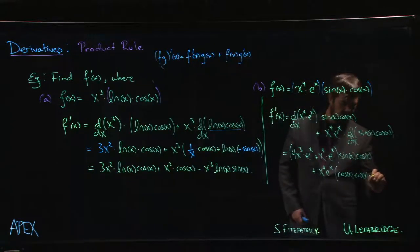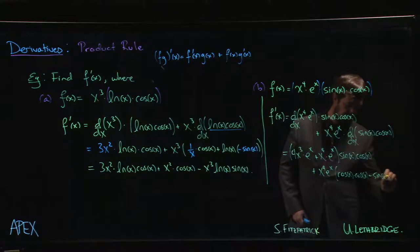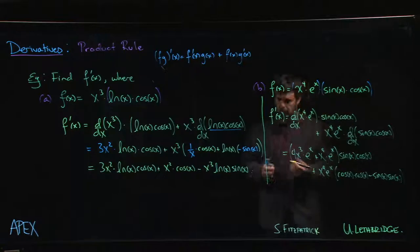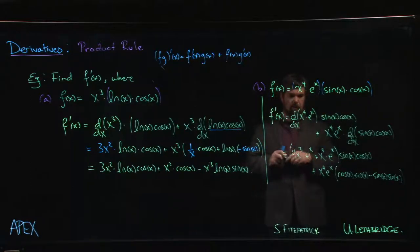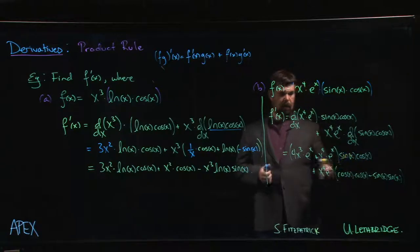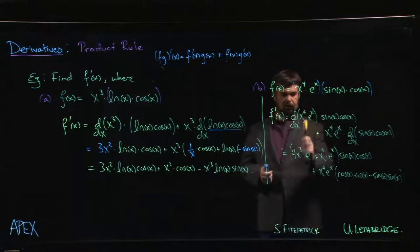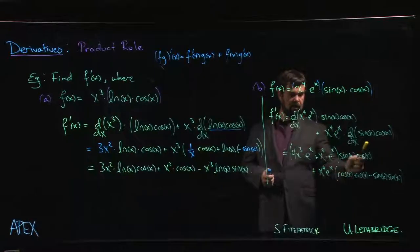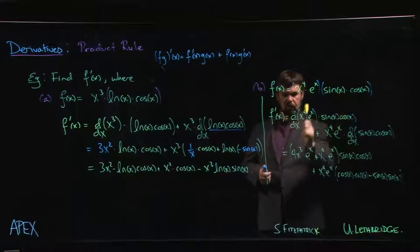The derivative of sin x · cos x is cos x · cos x plus sin x times the derivative of cos x, which is negative sin x — so minus sin x · sin x. And you're done. When you multiply this all out, you get four terms.